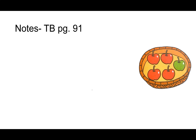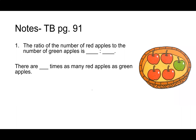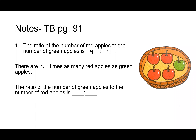Green and red apples. What is the ratio of the number of red apples to the number of green apples? Four to one. How many times as many red apples as green apples? Four. The ratio of the number of green apples to the number of red apples — Liam? One to four. This time it's backwards.